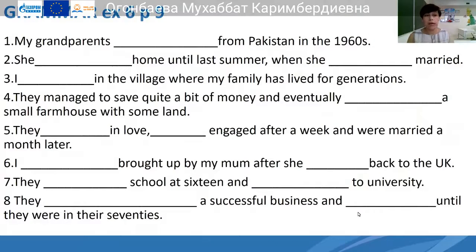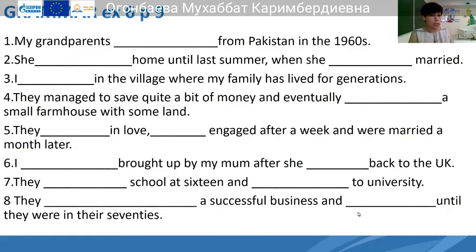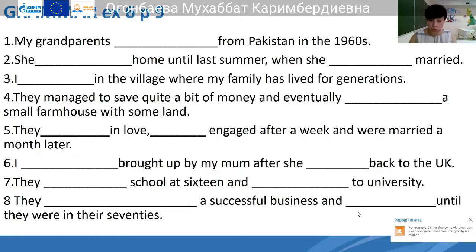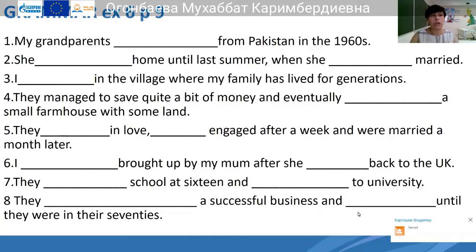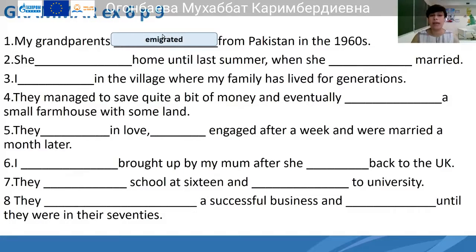Good. So this is exercise number six, page nine. We have to complete the sentences using past simple, and the words are given to you. Page number nine, exercise number six. The words are here. So: 'My parents from Pakistan in the sixties' — we have to use past simple. Very good, Nikita. My grandparents immigrated from Pakistan in the 1960s.